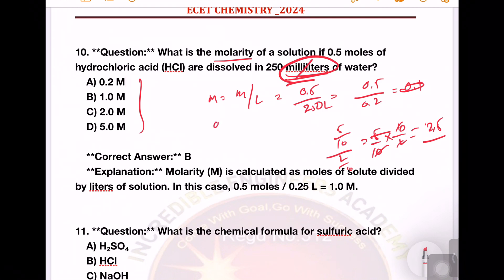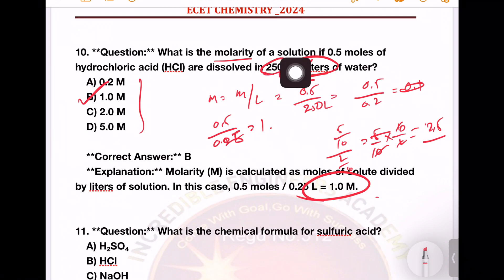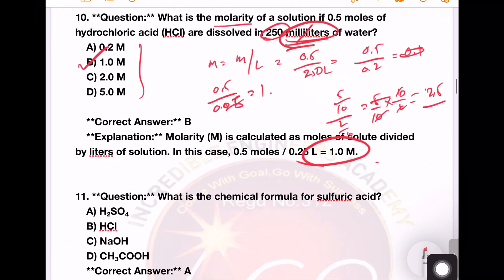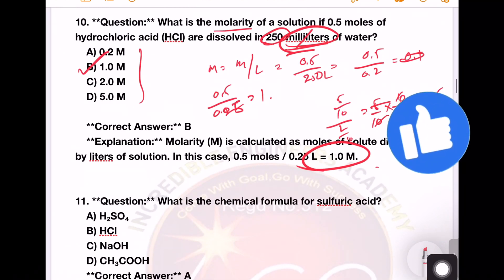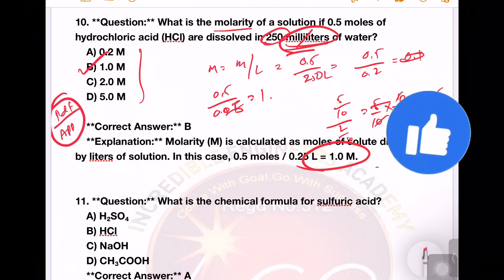So, 0.5 divided by 0.25 — if you calculate it, it equals 2. Option number B is the right answer. You can try it; if you have any mistakes, share in the comments. In the next class, we will discuss the remaining questions. If you have any PDF, you can download it in the app. Thank you.